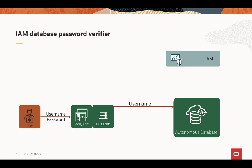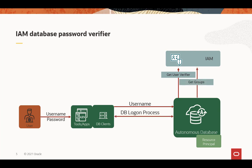The database clients will go through the regular logon process with the database and send the username. The Autonomous Database will identify itself to IAM using the OCI identifier called the Resource Principal, then get the User Verifier from IAM, and go through the regular logon process to authenticate the user. If the user is authenticated, it will go ahead and get the groups from IAM. These groups from IAM will establish the schema that the user will land in.